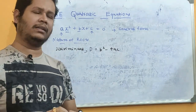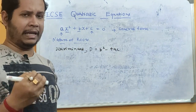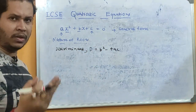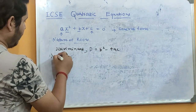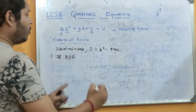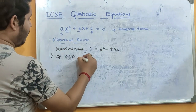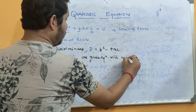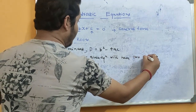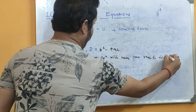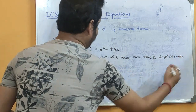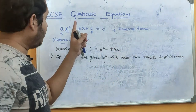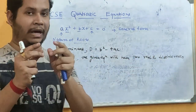There are always three possibilities for the value of D: it can be positive, zero, or negative. Let's see what happens in each case. The first case: if D is greater than 0, always remember that the given equation will have two real and distinct roots. So without solving the equation, you can conclude that the two roots will be different values.